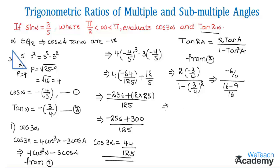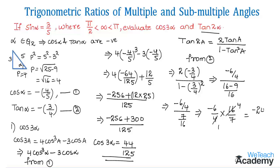Continuing the simplification: (−6/4) / (7/16) = (−6/4) × (16/7). Since 16/4 = 4, this gives −6 × 4 / 7 = −24/7. So the value of tan 2α = −24/7.